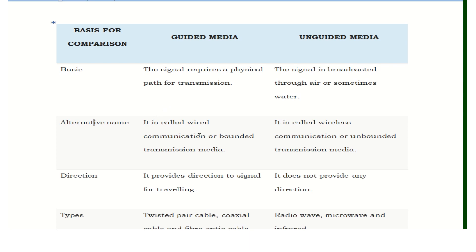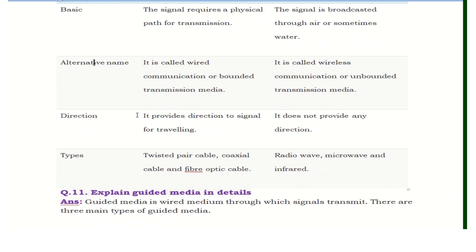The alternative name for guided media is wired media, because a physical medium is used for transmission of signals — it is also called bounded media. In unguided media, communication is wireless, so it is called wireless media, wireless communication, or unbounded transmission media. Guided media provides direction to signals for traveling. Types under bounded media include twisted pair cable, coaxial cable, and fiber optic cable. Unbounded media types include radio waves, microwaves, infrared, and Bluetooth.